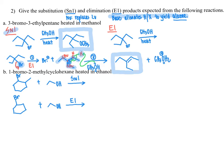Continuing with part B, I've drawn out our two starting structures: ethanol and 1-bromo-2-methylcyclohexane. We're going to do an SN1 reaction in the top case and an E1 reaction in the bottom case, since those two reactions compete when an alkyl halide reacts with a structure that can act as either a base or a nucleophile.